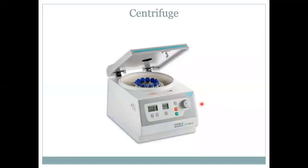This is the centrifuge machine. You can see we place our sample in these test tubes. Then we switch on the machine and with the help of spinning it separates different components of the cell or sample into different layers.